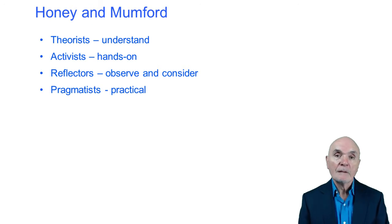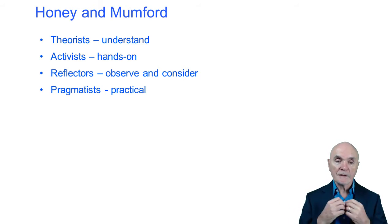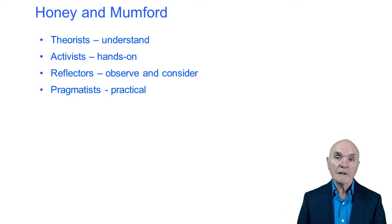Honey and Mumford identified four learning types, which is really relevant if you have a group of people and you're trying to teach, say, 40 people how to do something. It's important to realize that not everyone learns in the same way. First, you have the theorist, and the theorist likes to know all the theories before they begin working. If we're dealing with IKEA flat pack furniture, the theorist would open it up, get out the instructions, count out all the pieces, make sure they're all there, then follow the instructions to the letter.